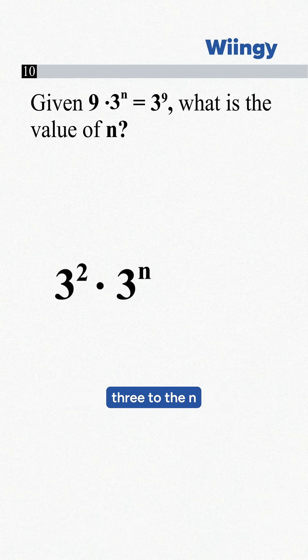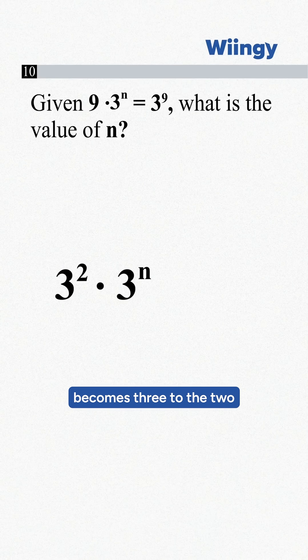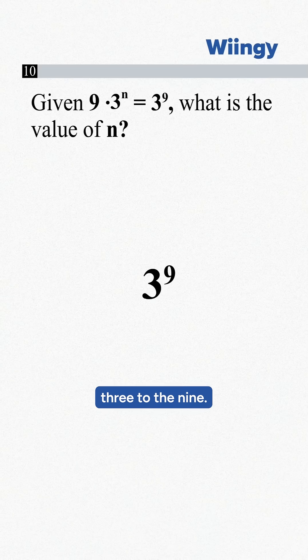So 3 squared times 3 to the n becomes 3 to the 2 plus n, and that equals 3 to the 9.